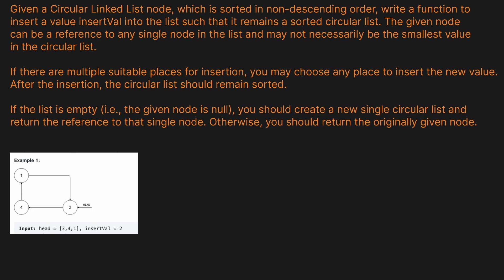Given a circular linked list node which is sorted in non-decreasing order, write a function to insert a value insertVal into the list such that it remains a sorted circular list. The given node can be a reference to any single node in the list and may not necessarily be the smallest value. If there are multiple suitable places for insertion, you may choose any place to insert the new value. After the insertion, the circular sorted list should remain sorted. If the list is empty — i.e., the given node is null — you should create a new singular circular list and return the reference to that single node. Otherwise, return the originally given node.